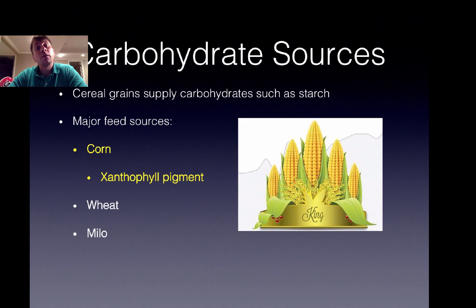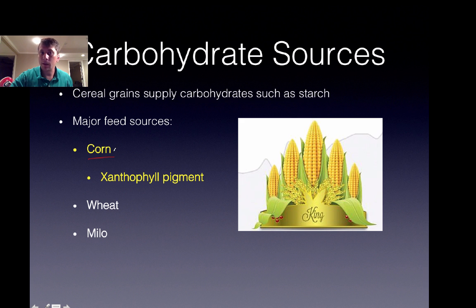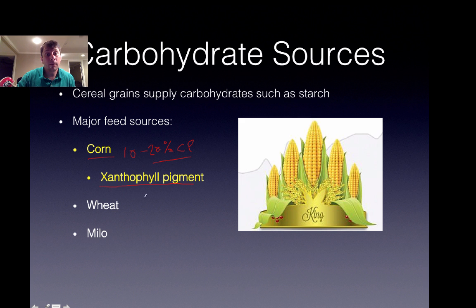Cereal grains are going to supply carbohydrate starch to the poultry feed. The major source is corn. Corn is most often found in the poultry diet in U.S. poultry feeds, and it contributes around 10 to 20% of the crude protein as well.